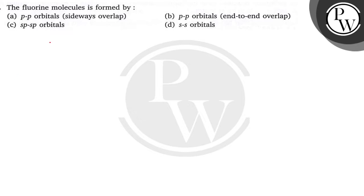Hello, let's read the question. The question says the fluorine molecule is formed by: (a) pp orbitals sidewise overlapping, (b) pp orbitals end-to-end overlap, (c) sp-sp orbitals, and (d) ss orbitals. So let's do the question. Which of these forms the fluorine molecule, F2?